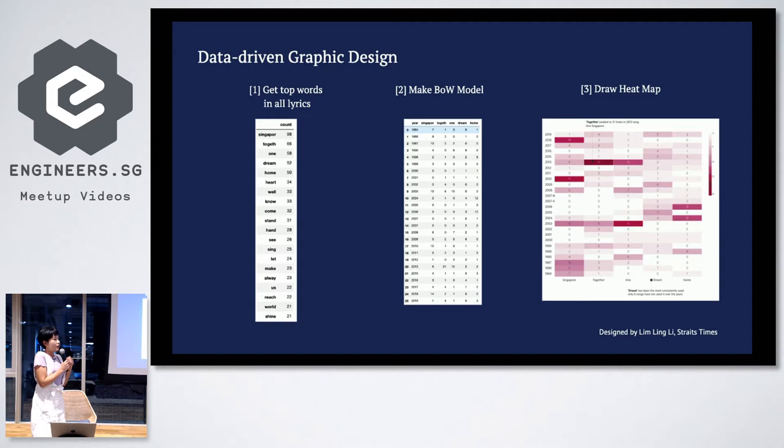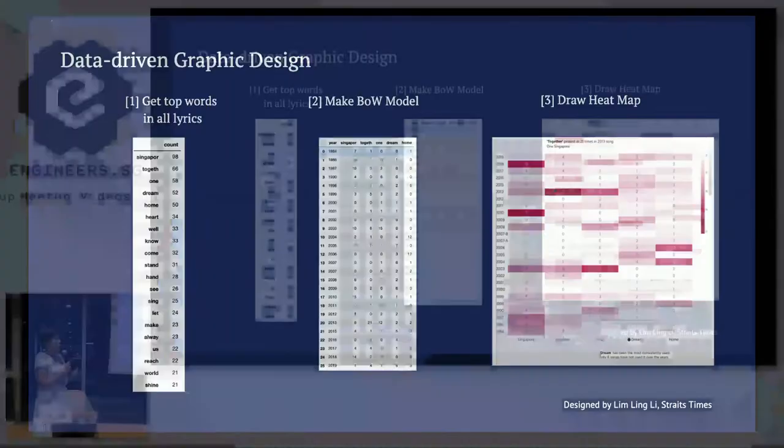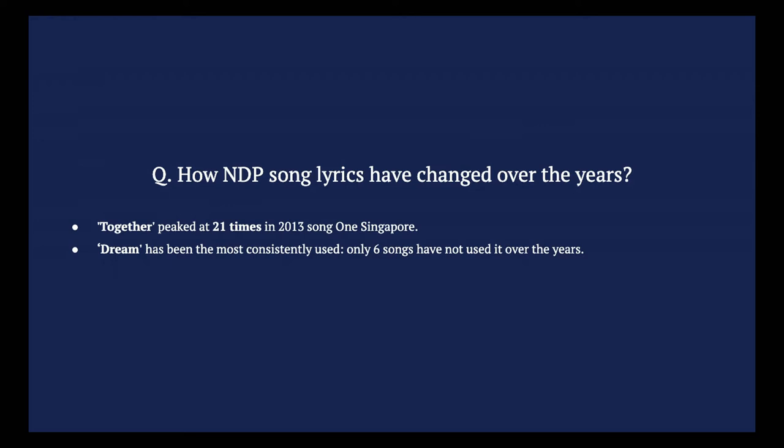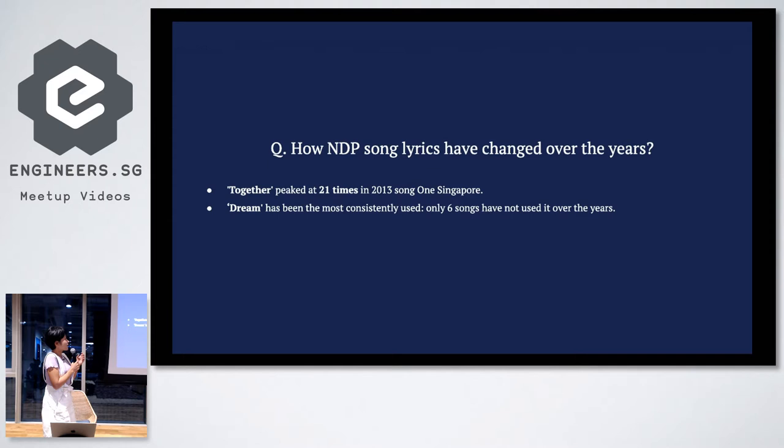After that I delivered the data to the designer and the journalist so they tried to find out what are the top words in all the lyrics. This is the data that I gave to them and we made the bag of words model and then this data was converted into the finalized graphic. Our designer made this nice heat map based on our data. Our research question was how NDP song lyrics have changed over the years. Based on our data we found that 'together' peaked at 21 times in 2013 in one song named One Singapore, and 'dream' has been the most continuously used. Only six songs have not used it over the years. That was quite interesting.